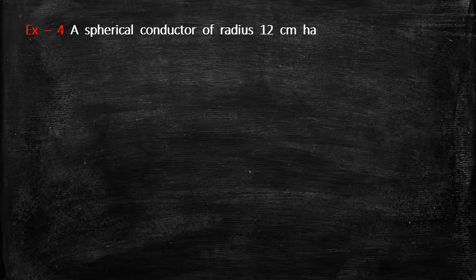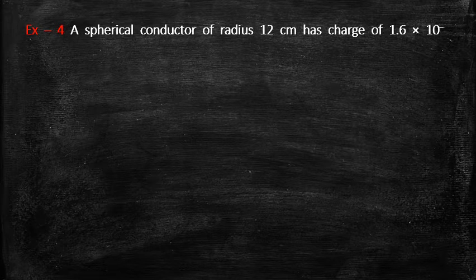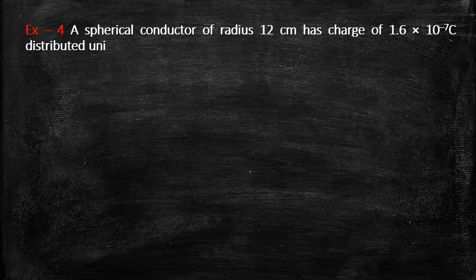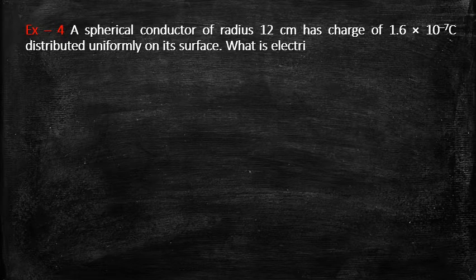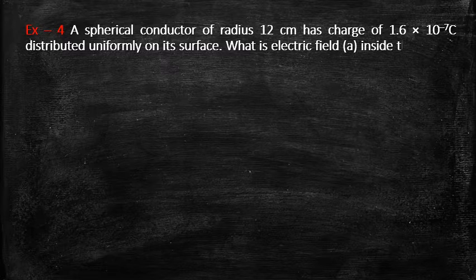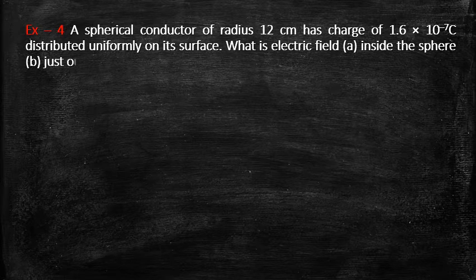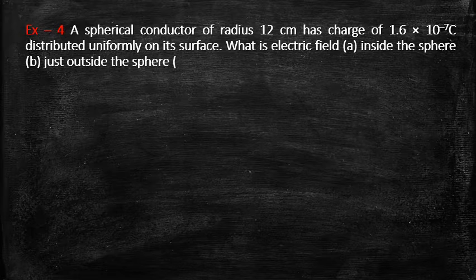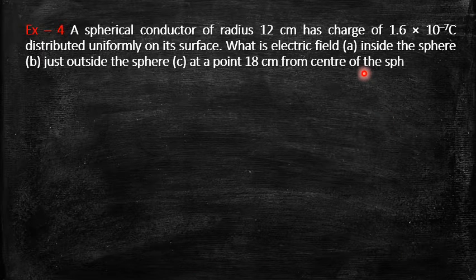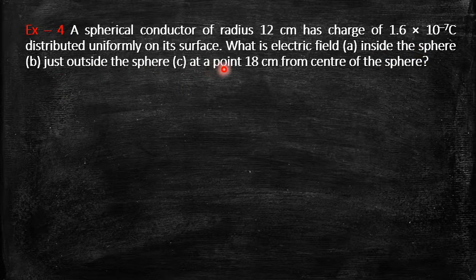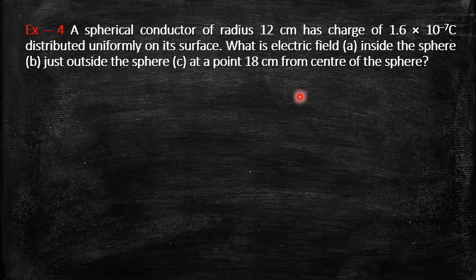In the fourth problem, we have a spherical conductor of radius 12 centimeters carrying a charge of 1.6×10⁻⁷ coulombs distributed uniformly on its surface. We are asked to find the electric field at a point inside the sphere, just outside the sphere, and at a point 18 centimeters from the center.